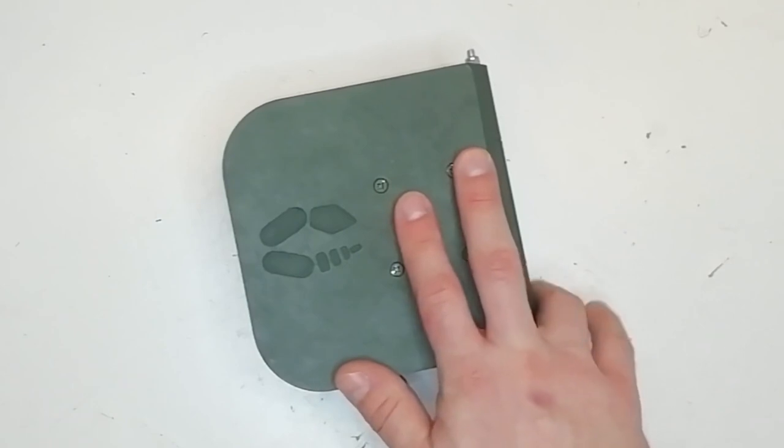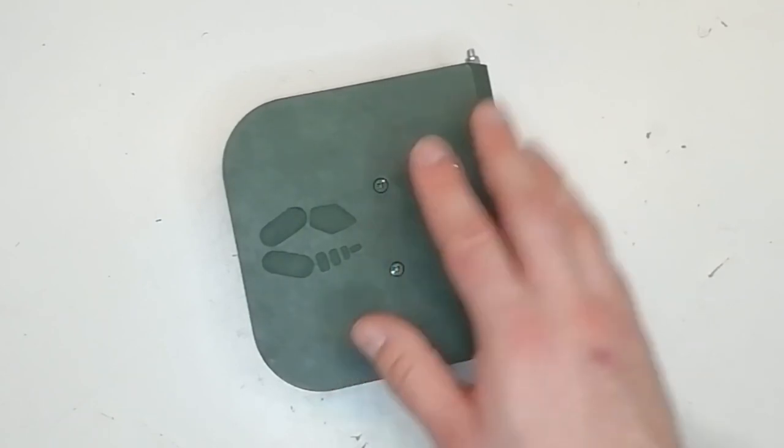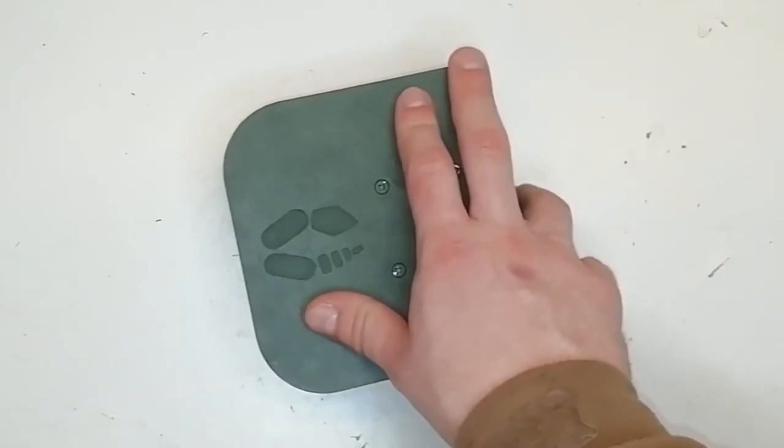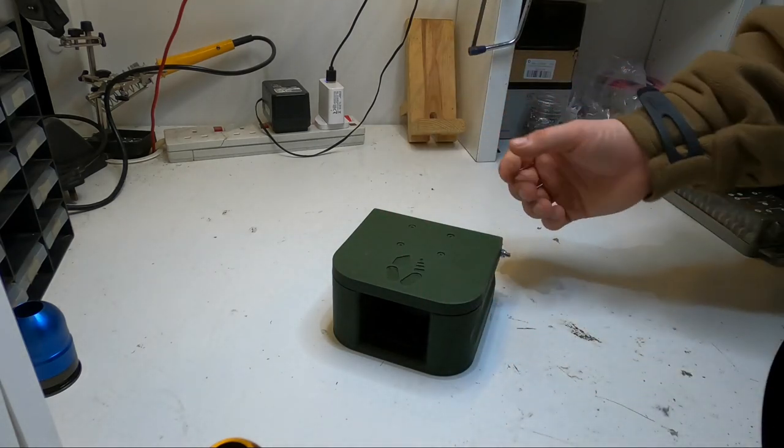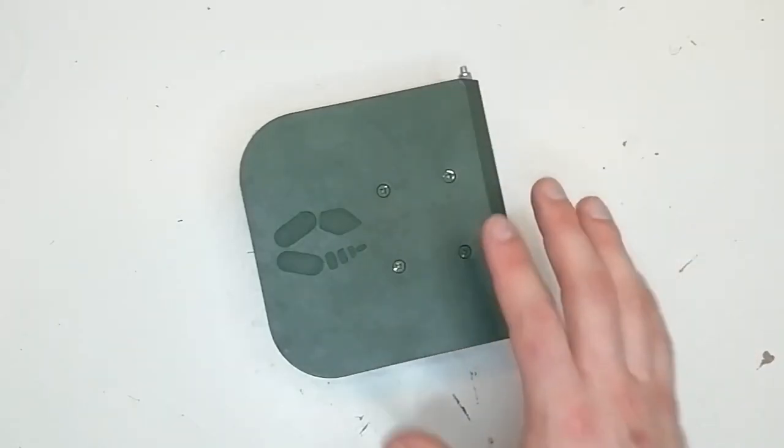Now I printed it in black PLA which is not exactly the best color for this sort of thing because it's going to have a really defined outline. What I'm going to do with it is I'm going to cut out some DPM woodland pattern and I'm going to glue it on and try and camo it up.